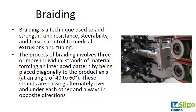Braiding is the other technique I want to look at. As the name suggests, it's like braiding or plaiting hair, as we used to do as children. Braiding adds strength, kink resistance, and steerability to medical extrusions and tubing, and it gives good torsion control — meaning it gives the surgeon good control over the bendability of a catheter, for example a coronary catheter.